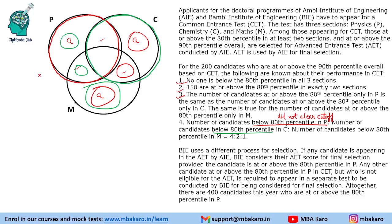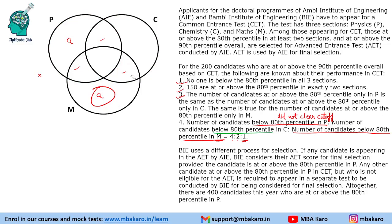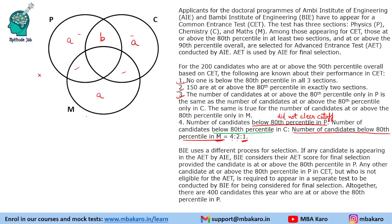The ratio is 4:2:1 and the least is for M. We take a variable for the lowest value. The number of candidates below 80th percentile in M we will take as some variable. This portion outside M is below 80th percentile in M. The two equal only-in-two-section values are A; let us say the central region is B.